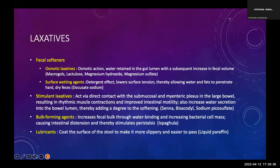Stool softeners include osmotic laxatives and surface wetting agents. Osmotic laxatives retain water in the gut lumen, increasing fecal volume — examples include lactulose and macrogols like polyethylene glycol. Surface wetting agents have a detergent effect, lowering surface tension to allow water and fat to penetrate hard, dry feces — an example is docusate sodium, though this is now not recommended. Stimulant laxatives such as senna, bisacodyl, and sodium picosulphate act by direct contact with submucosal and myenteric reflexes in the large bowel, affecting both motility and secretion. Other classes include bulk-forming agents and lubricants.